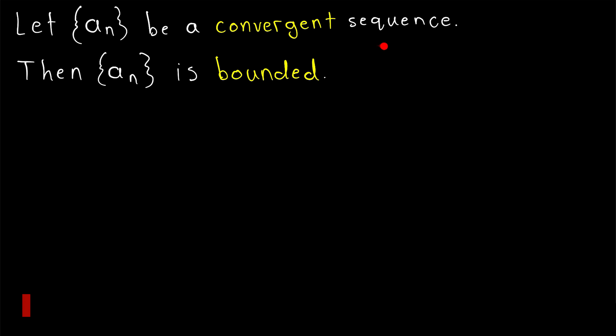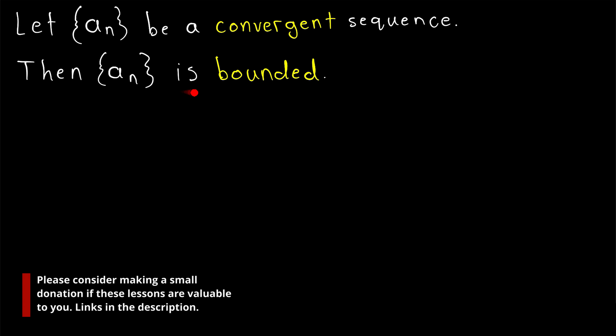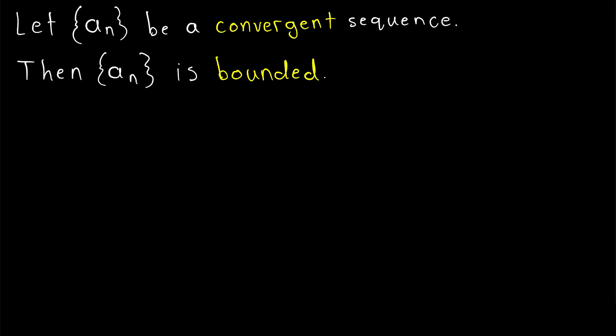We're going to prove that a convergent sequence must be bounded. I'll leave a couple links in the description to lessons I've done on bounded sequences. The definition is basically exactly what you would expect. The idea behind this proof is pretty straightforward. Let's say we've got some sequence a_n that converges to a number, let's say a.